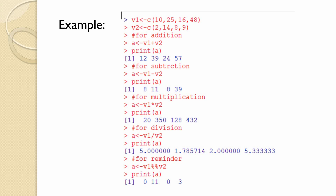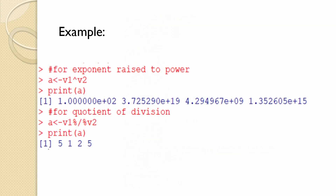For remainder, a is assigned V1 %% V2, which gives the remainders when V1 elements are divided by V2 elements. The remainder values are 0, 11, 0, and 3. For exponent, we give the command a = V1 raised to V2. If we print a, we get the corresponding power values. For quotient of partial division, we use the %/% operator, and printing a gives the quotient values when V1 elements are partially divided by V2 elements.